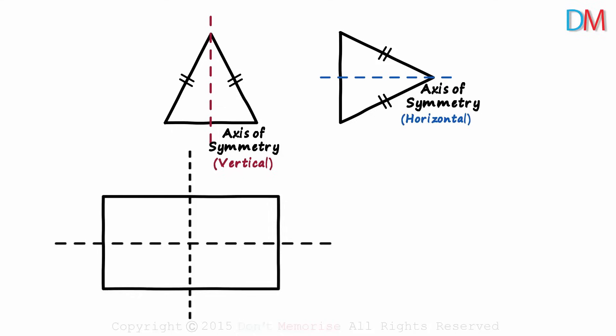But wait! Some of us may be wondering if the diagonals are also the axis of symmetry. Let's say we have a diagonal like this. You can see that folding it along the diagonal does not give us matching parts.